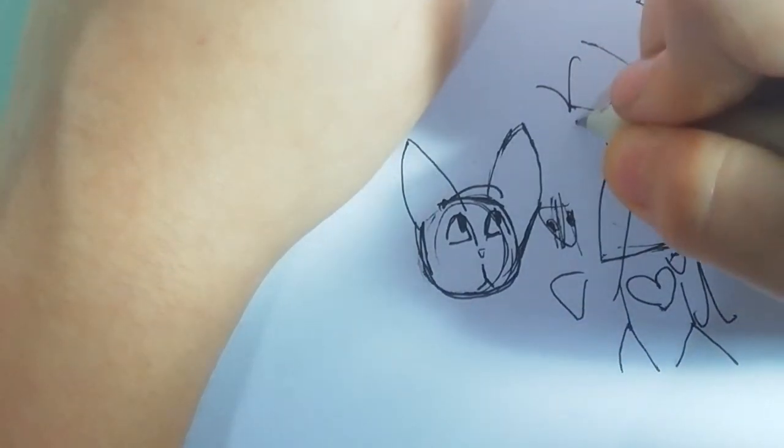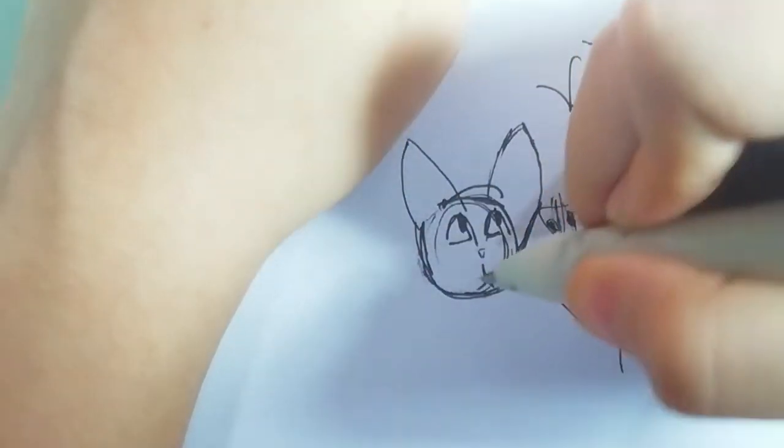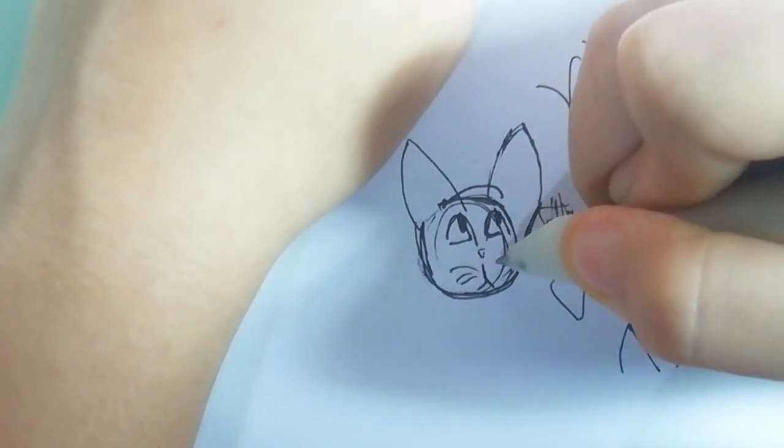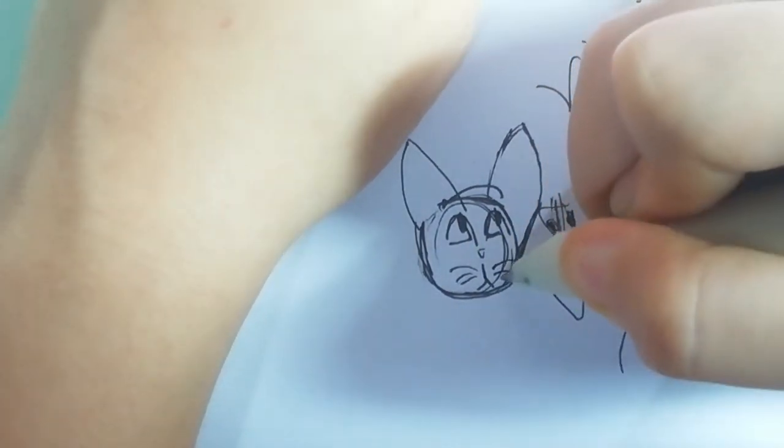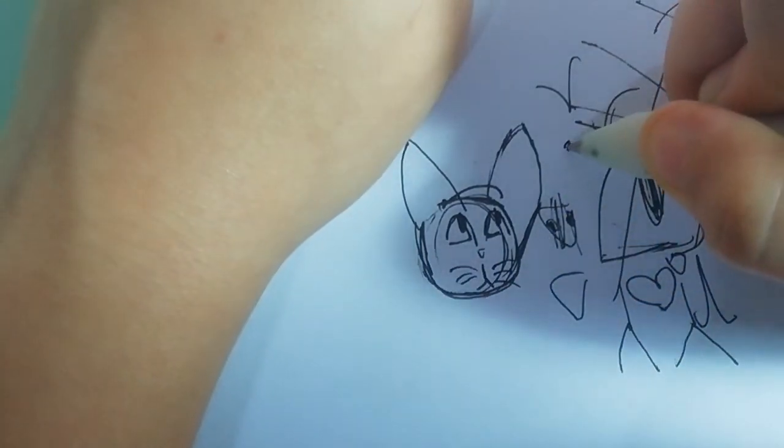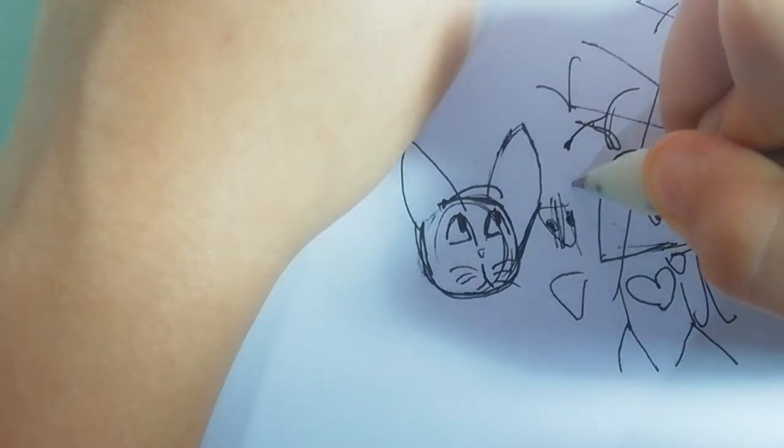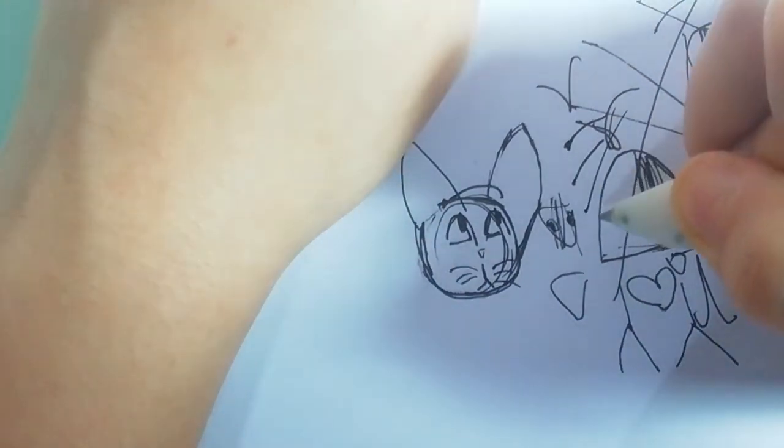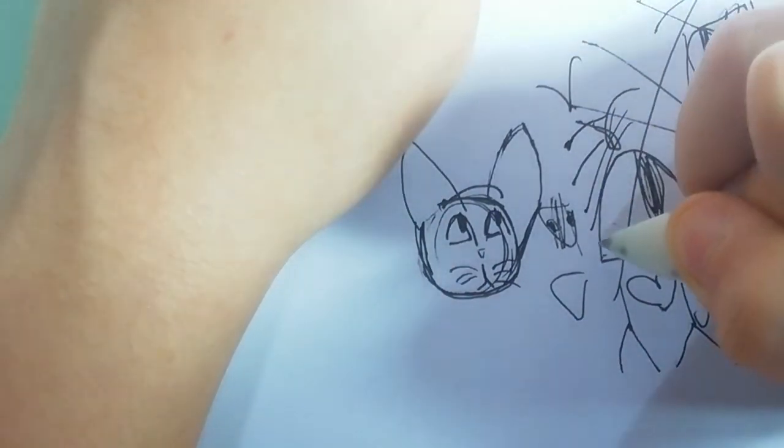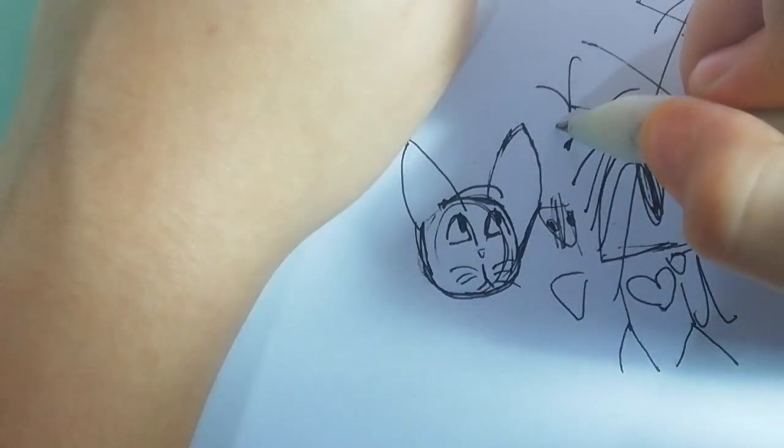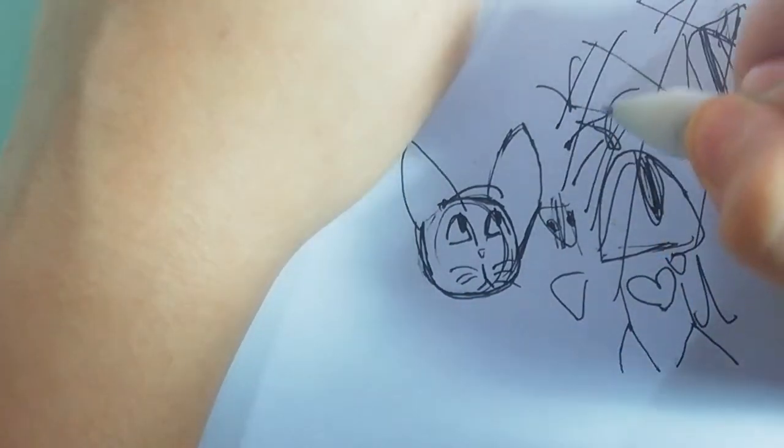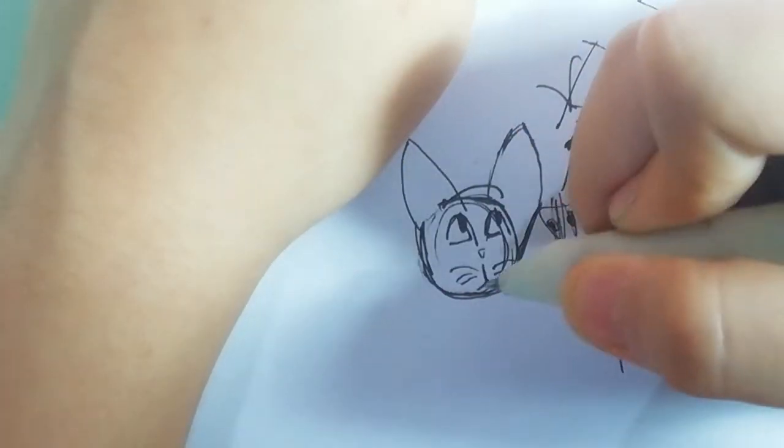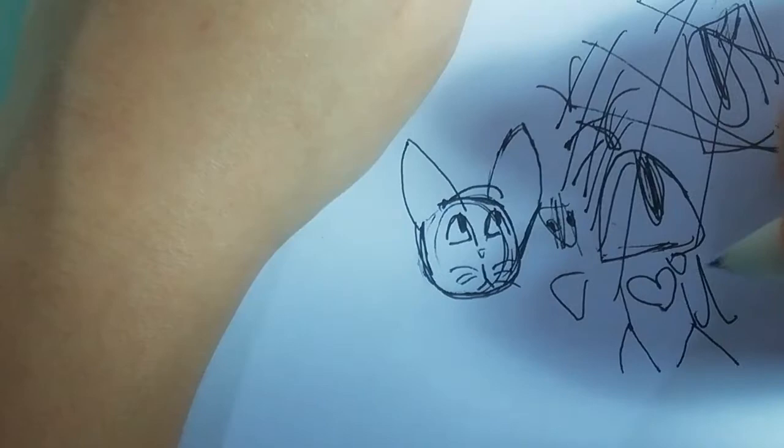Now you're going to draw the whiskers like this. Did it the wrong way, sorry. So you want to go like this and quickly go like that. You could practice. Make sure they're this kind of shape.